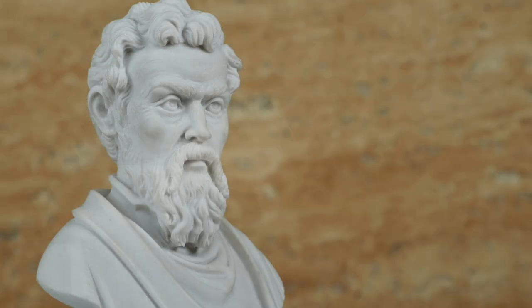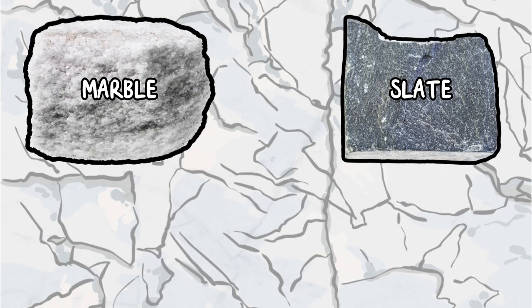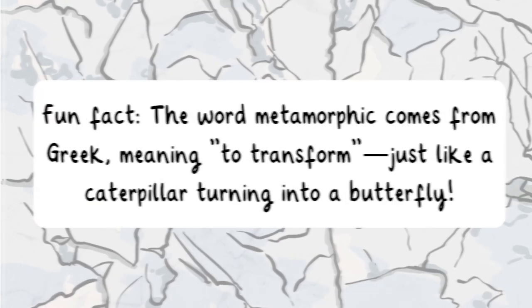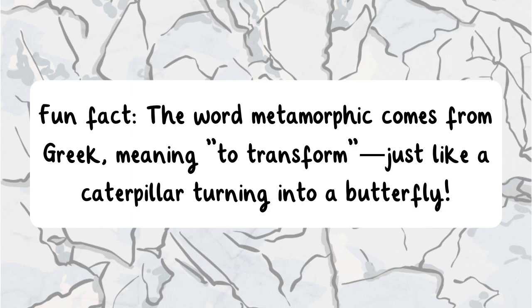Many statues and buildings are made from marble. Slate, formed by shale, is often used for chalkboards and roofs. Quartzite is a super hard rock that comes from sandstone. Fun fact: the word metamorphic comes from Greek, meaning to transform — just like a caterpillar turning into a butterfly.